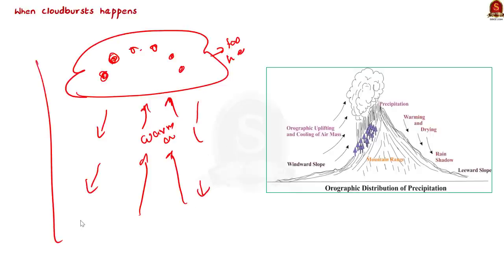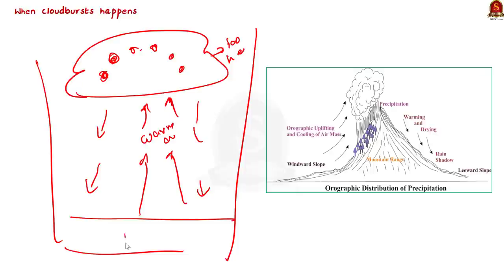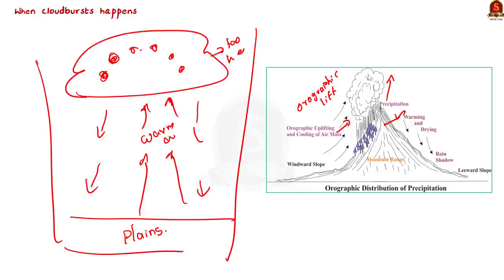In mountainous regions, cloudburst happens due to a phenomenon called orographic lift — the upward movement of clouds after they strike the mountain. This upliftment due to orographic lift results in the formation of cumulonimbus clouds, and these clouds precipitate suddenly, causing cloudburst.